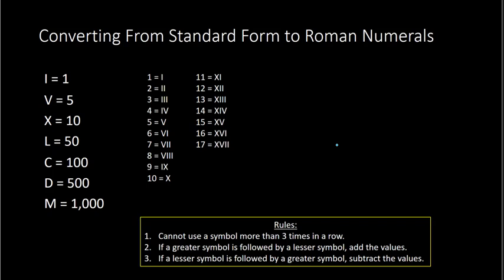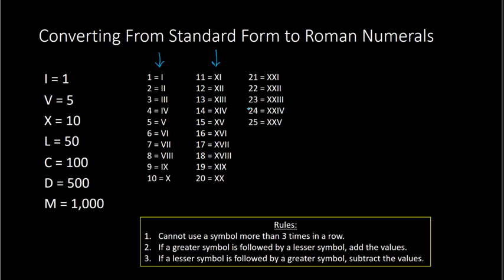Sixteen is XVI. Seventeen is XVII. Eighteen is XVIII. Nineteen is XIX. And then twenty would be two tens, so XX. Notice what I did — I took each of these Roman numerals and just put an X in the front, giving me ten more than that first column. So with an X in the front, we have eleven through twenty. For twenty-one through twenty-nine, we put two X's in the front instead of just one, taking us all the way to twenty-nine.